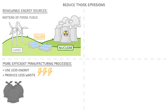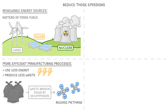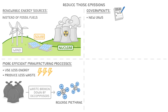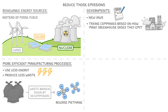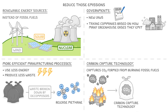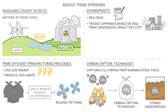Reducing waste is actually really important, because waste is often broken down by decomposers, which can release methane. Governments can also help, for example by introducing new laws, or taxing companies based on how many greenhouse gases they emit. There's also something called carbon capture technology, that can capture the carbon dioxide formed when we burn fossil fuels, before it can escape into the atmosphere. It can then be stored deep underground, in cracks in the rocks, such as old oil wells, where it can't escape to the environment.